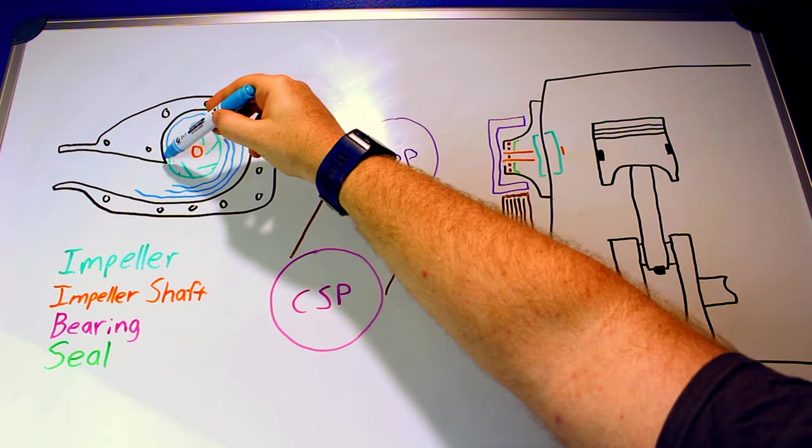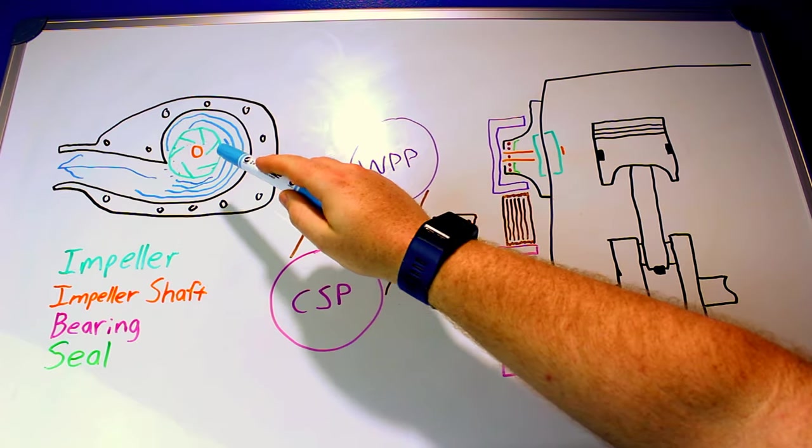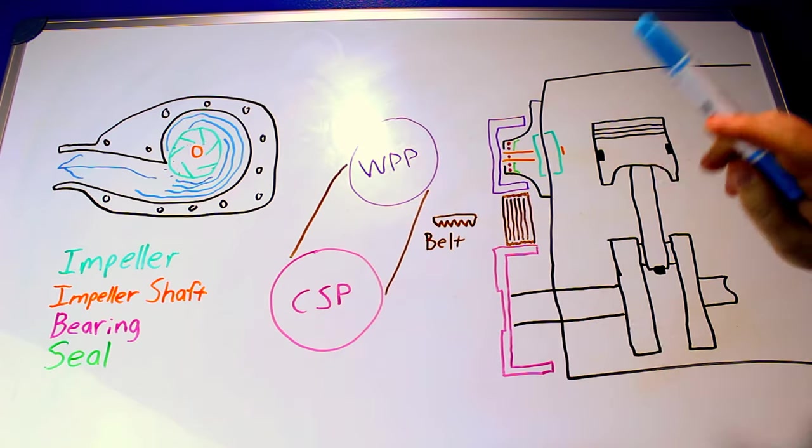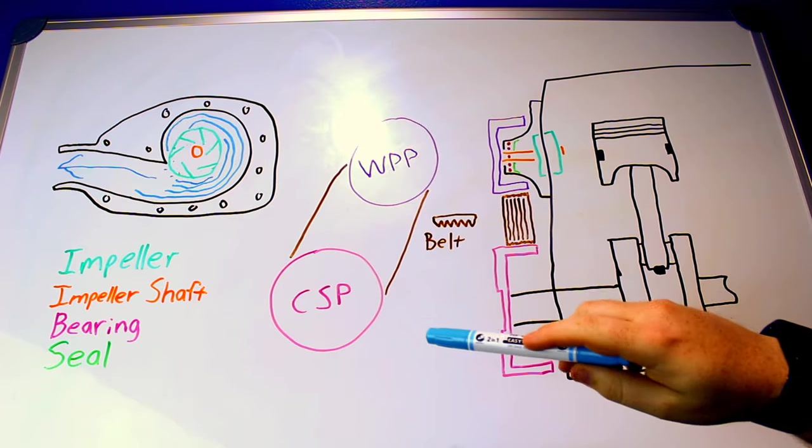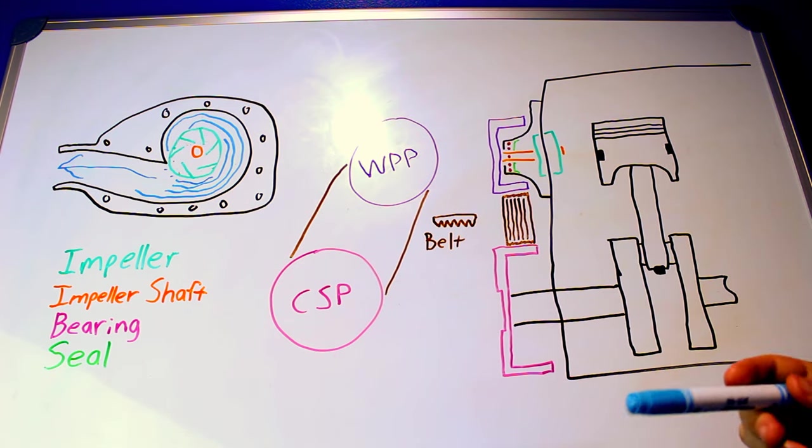The further you get from this starting point the more water is being added by this impeller. How fast does this impeller spin though? Well on a mechanical pump that's always going to be tied to engine speed. It's not going to be a 1 to 1 ratio unless you set it up that way.